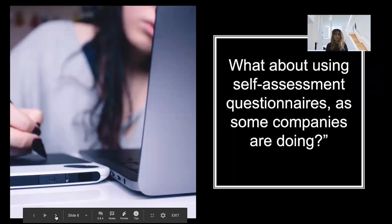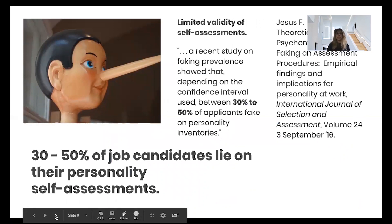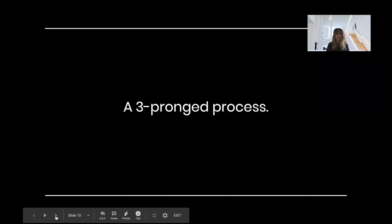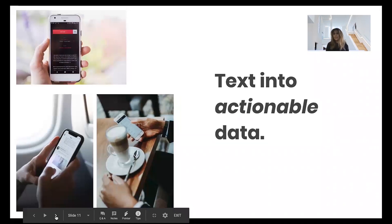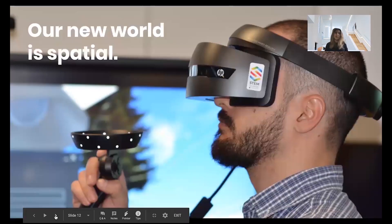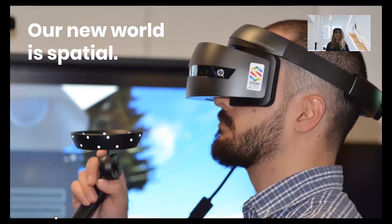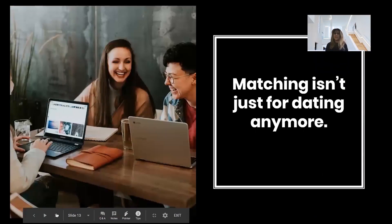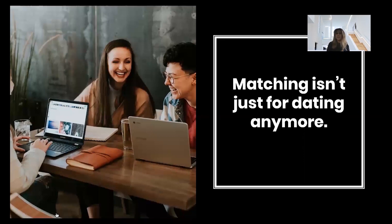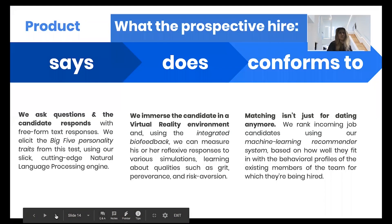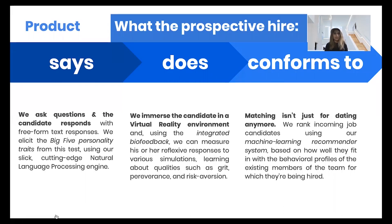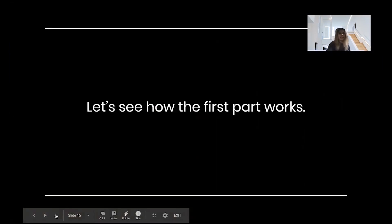What about using self-assessment questionnaires? According to published research, 30 to 50 percent of job candidates lie on personality self-assessments. So instead, we use a three-prong process: first, text responses to free-form questions at the interview, which we convert into actionable data. Second, we provide augmented reality and virtual reality simulations and observe how prospective hires respond in given situations. Third, we use a machine learning recommender algorithm to match the right people to teams — what the prospective hire says, what they do in virtual simulations, and how they fit in terms of personality traits.